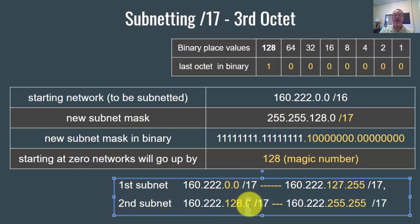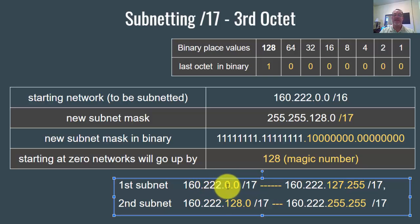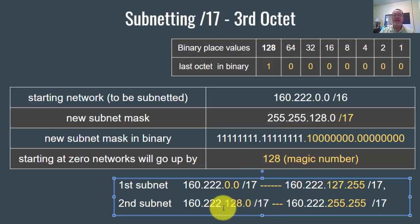The broadcast address for the first subnet is 127.255, so all addresses between 0.0 and 127.255 are usable host addresses. For example, 160.222.5.255 is a host address, and even 160.222.10.0 — though it looks like a network address — is actually a host address. The second subnet's broadcast address is 255.255, and all numbers in between are hosts. That's subnetting with a slash 17.